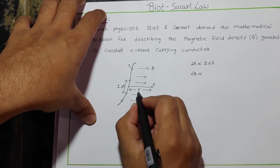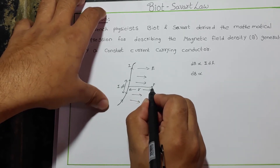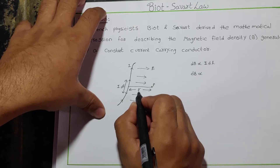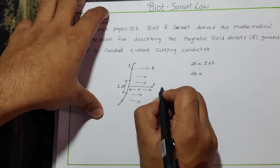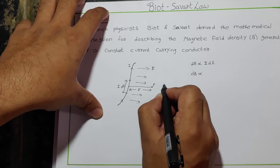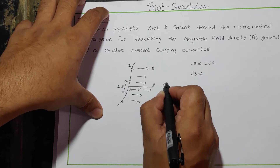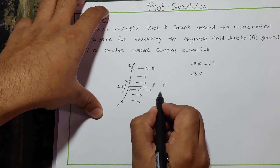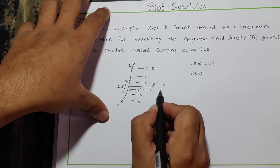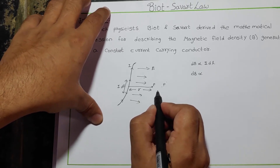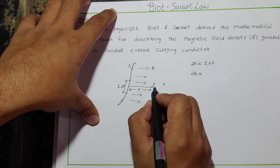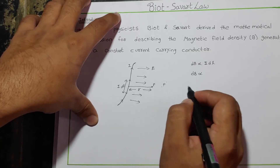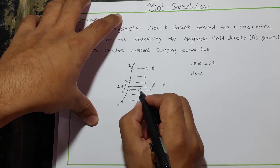In another case, as the distance of point P is R — when the distance R is increased and the point is changed to P-dash — then the magnetic flux linkage would be less in that direction. So we can say that the magnetic field dB is inversely proportional to R².